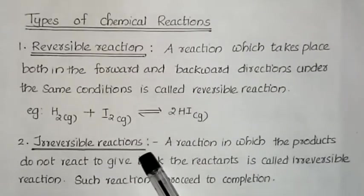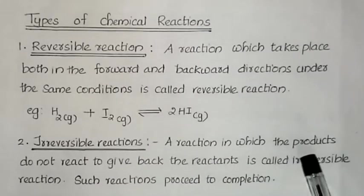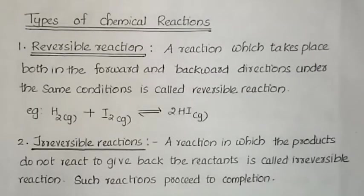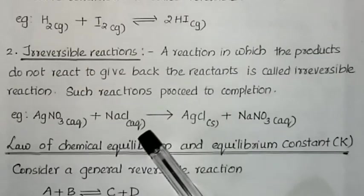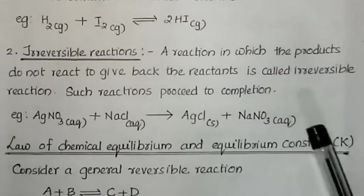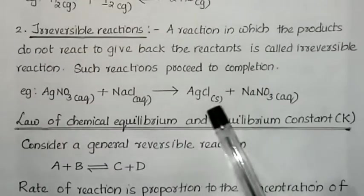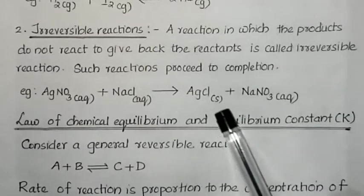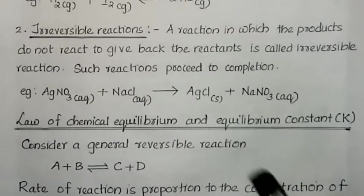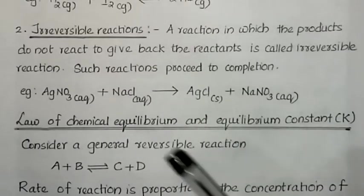The next type is irreversible reactions. A reaction in which the products do not react to give back the reactants is called an irreversible reaction. Such reactions proceed to completion. For example, silver nitrate plus NaCl gives silver chloride (AgCl solid) plus sodium nitrate (aqueous). The reactants only combine to form products; only the forward reaction takes place.